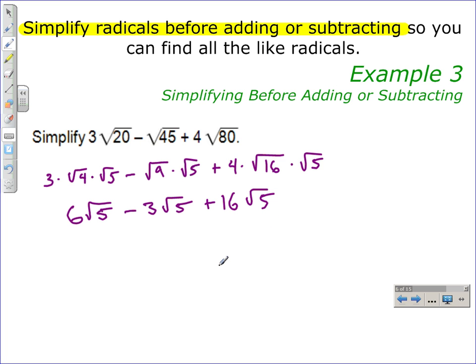At this point, you could use the distributive property showing that all three of these terms have the square root of 5 in common. You do that like this: factor the √5 out of 6√5 leaves 6, factor the √5 out of -3√5 leaves -3, factor the √5 out of 16√5 leaves 16, and on the outside of the parentheses will be the square root of 5.